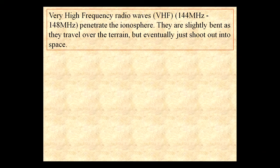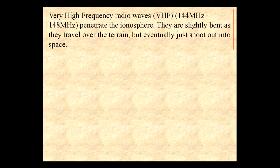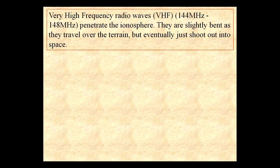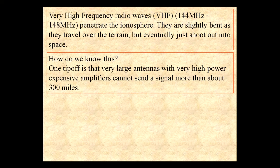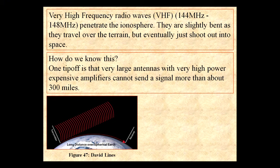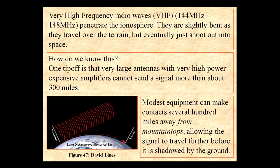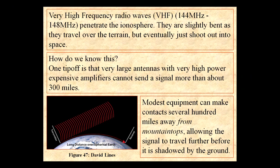Very high-frequency radio waves — 144 MHz to 148 MHz — penetrate the ionosphere. They are slightly bent as they travel over the terrain but eventually shoot out into space. One key indicator is that very large antennas with very high, expensive amplifiers cannot send a signal more than about 300 miles, while modest equipment from mountaintops can make contact several hundred miles away, allowing the signal to travel farther before being shadowed back to the ground.